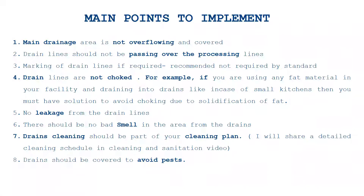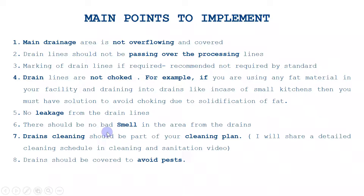Fourth, drain lines should not be blocked. You have to ensure this - for example, in a kitchen using fats and oils, when temperature is low there are chances that fat will solidify in the lines and cause blockage, resulting in bad flow. So you have to find a way to avoid solidification of fat. Fifth, there should be no leakage or dripping in the drain lines. Sixth, there should not be bad smell near the kitchen or sink area.